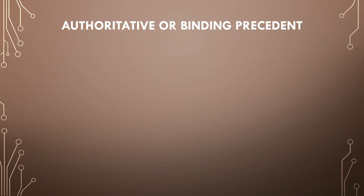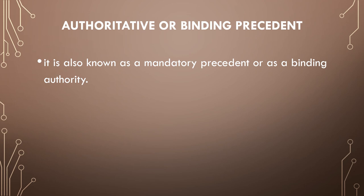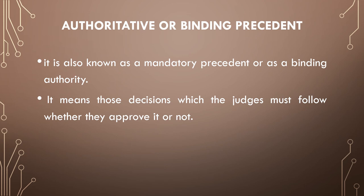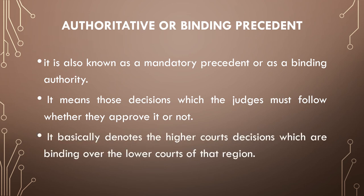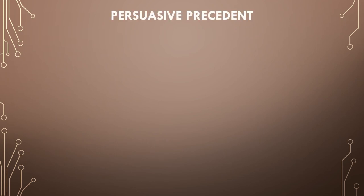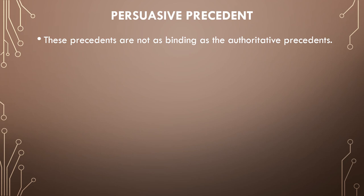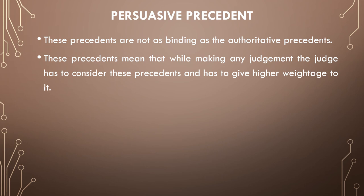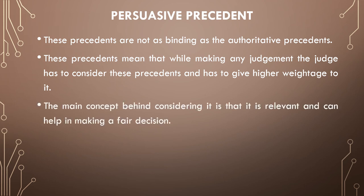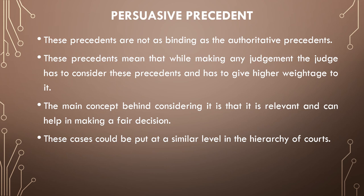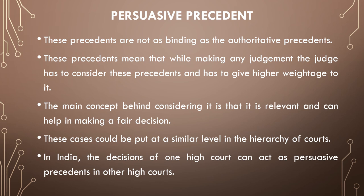Authoritative or binding precedent, also known as mandatory precedent or binding authority, refers to decisions which the judge must follow whether they approve of them or not. It denotes higher court decisions which are binding over lower courts. Persuasive precedents are not as binding as authoritative precedents. While making any judgment, the judge has to consider persuasive precedents and give higher weightage to them as they are relevant and can help in making a fair decision. These cases could be at a similar level in the hierarchy of courts; in India, the decision of one high court can act as persuasive precedent in other high courts.